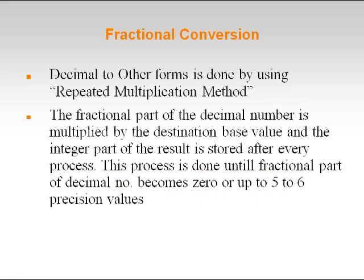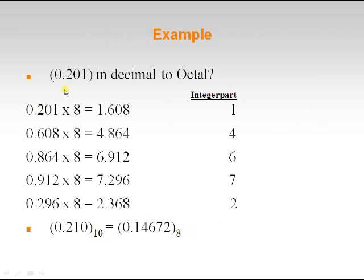So if we have a decimal fractional part and we want to convert it to another form, we multiply the given fractional part by the destination base. For example, converting 0.201 decimal to octal: multiply 0.201 by 8, store the integer part, then continue multiplying the fractional result by 8 each time.